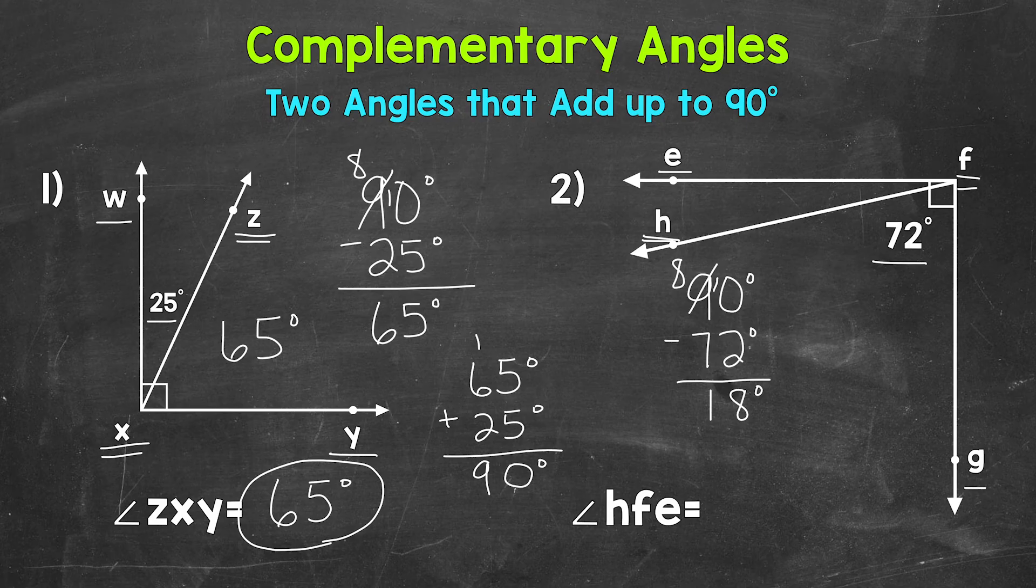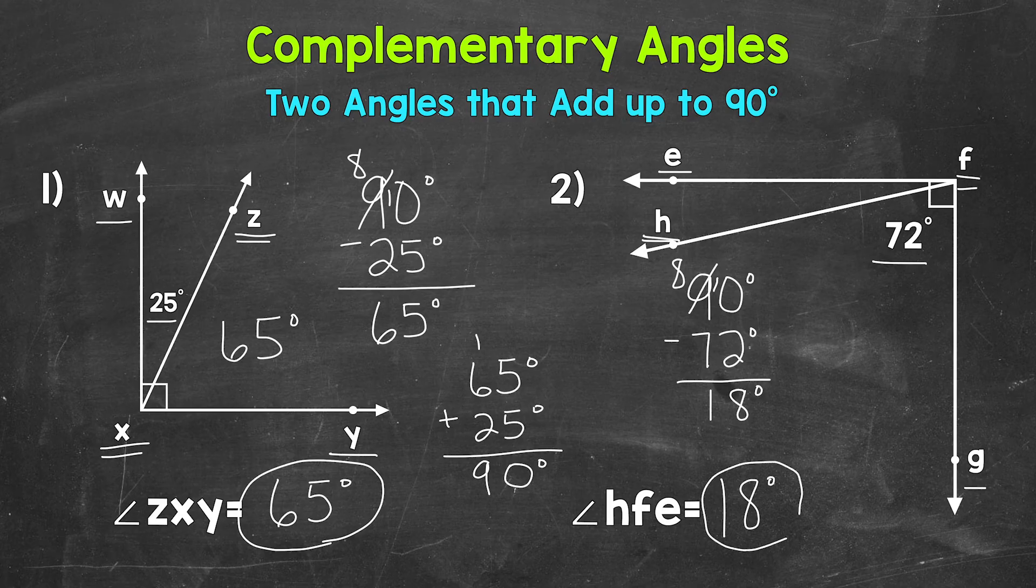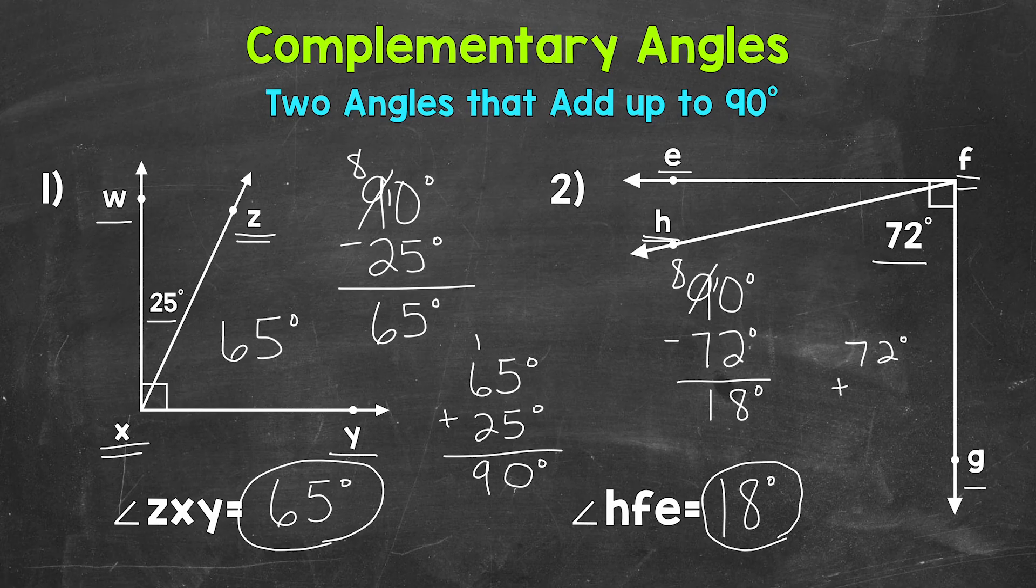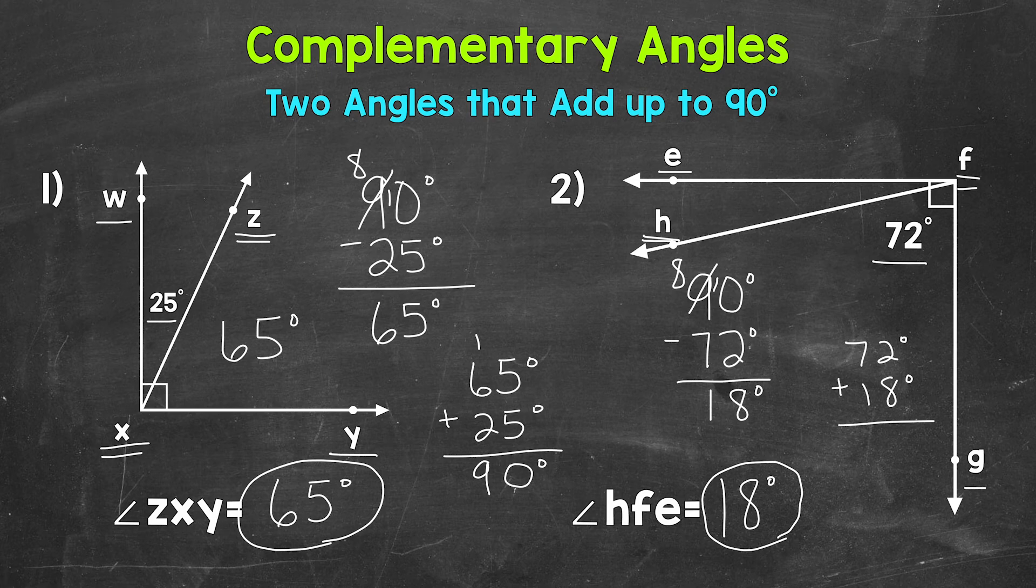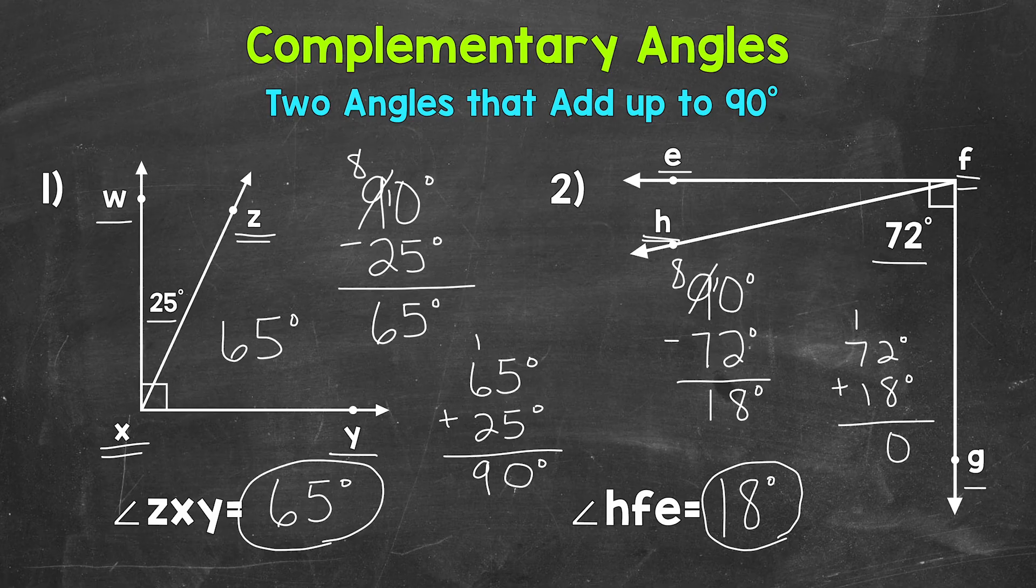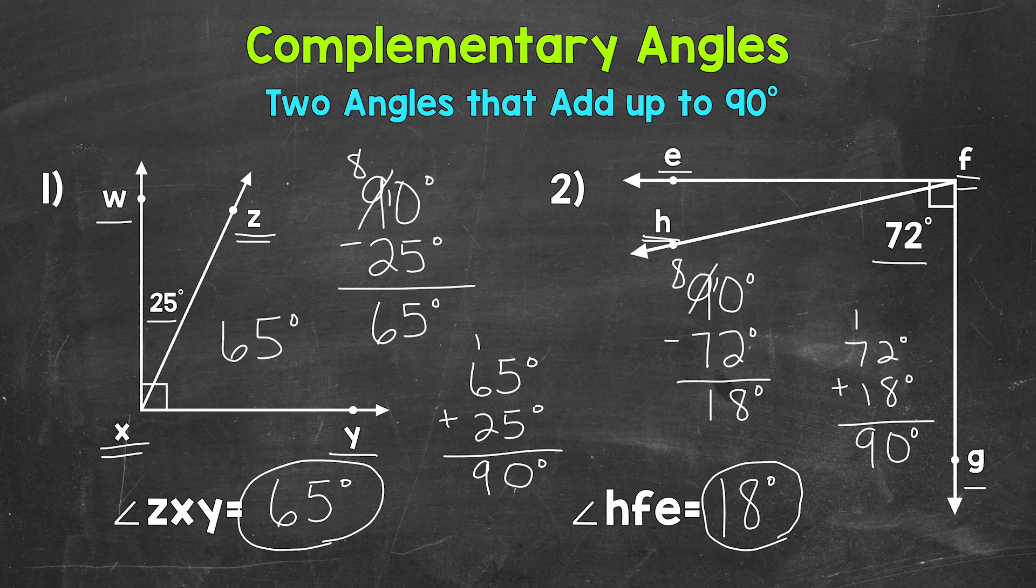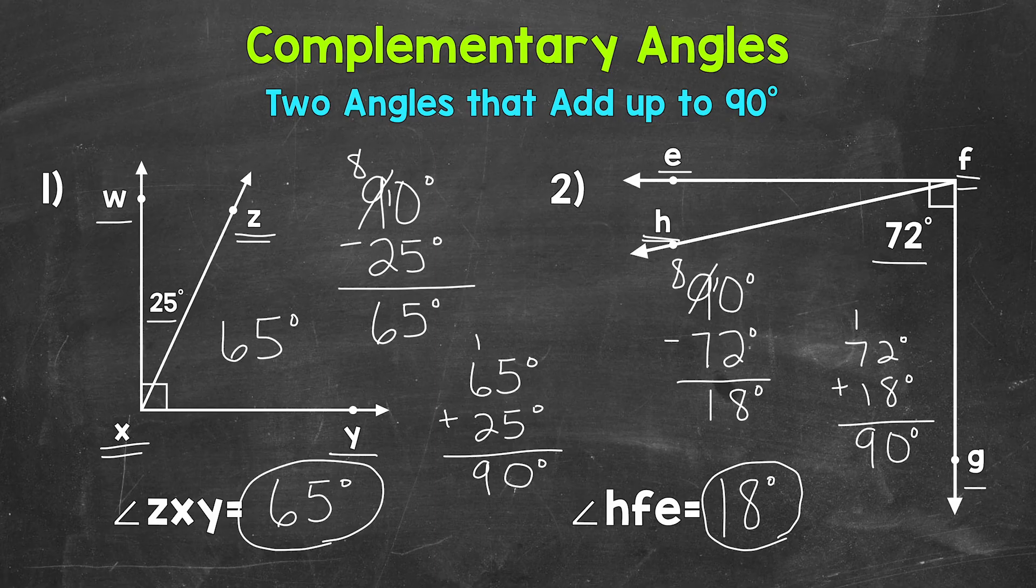Let's double check to make sure. So we'll do 72 degrees plus 18 degrees. Make sure it equals 90. 2 plus 8 is 10. So let's put our 0. Carry the 1. And then 1 plus 7 is 8. Plus 1 is 9. So those two angles do in fact equal 90. We have the correct angle measure for HFE, 18 degrees.